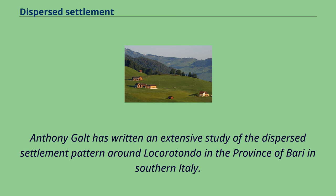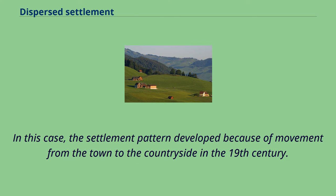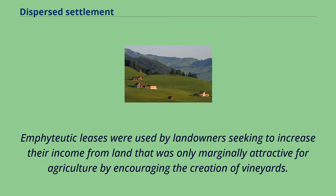Anthony Galt has written an extensive study of the dispersed settlement pattern around Locorotondo in the province of Bari in southern Italy. In this case, the settlement pattern developed because of movement from the town to the countryside in the 19th century. Emphyteutic leases were used by landowners seeking to increase their income from land that was only marginally attractive for agriculture, by encouraging the creation of vineyards.